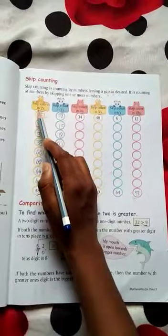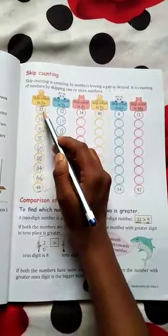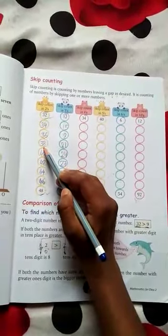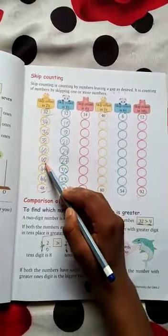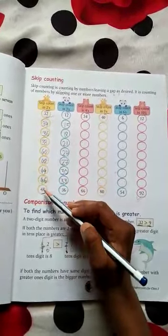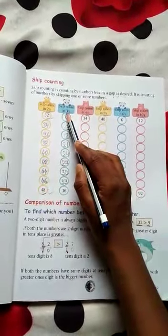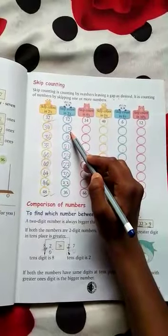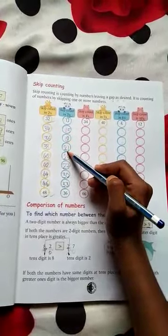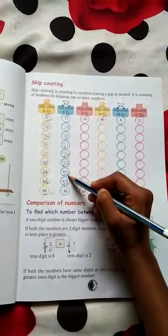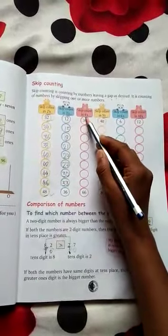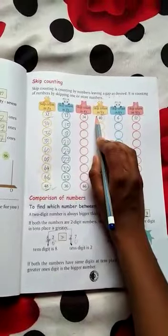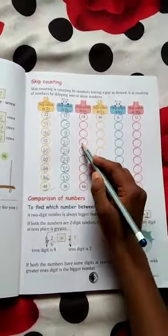Let's practice skip counting. We take a gap of 3. There is 12, then we have 15, then we have 18, then we have 21, then we have 24, then we have 27, then we have 30, then we have 36. We have to practice the skip counting and this will help us.